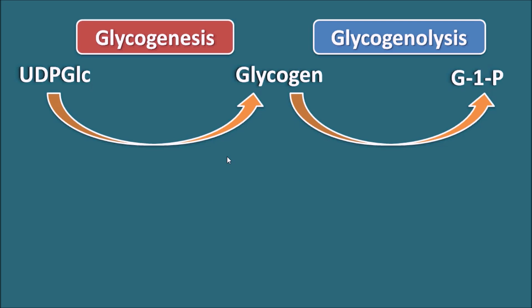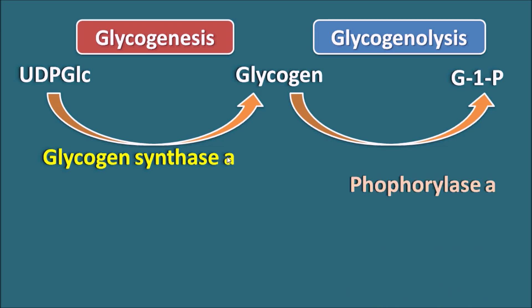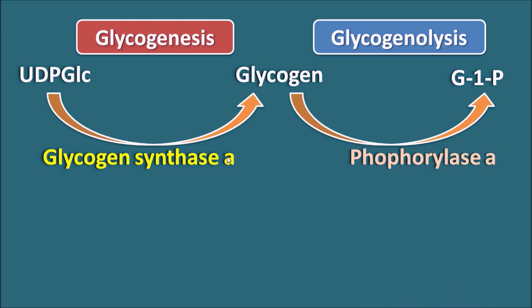The conversion of UDP glucose to glycogen is mediated by a key enzyme, glycogen synthase A. On the other hand, glycogen is broken down to glucose 1-phosphate by the phosphorylase A enzyme. Here, the letter A indicates they are the active forms of the enzymes.